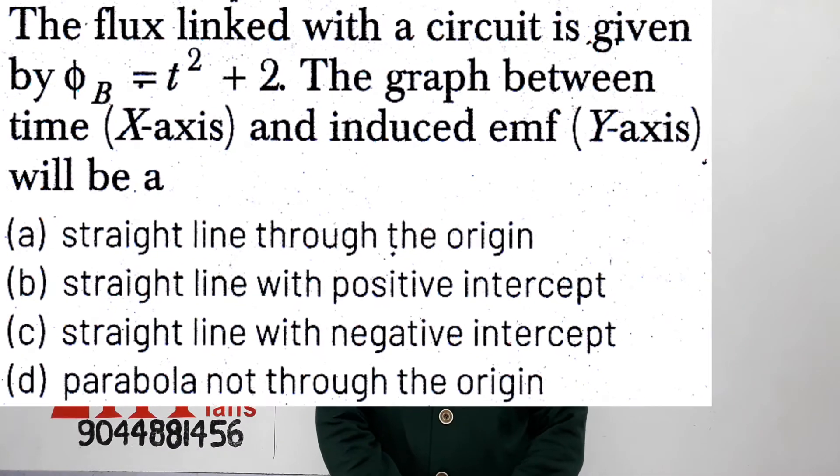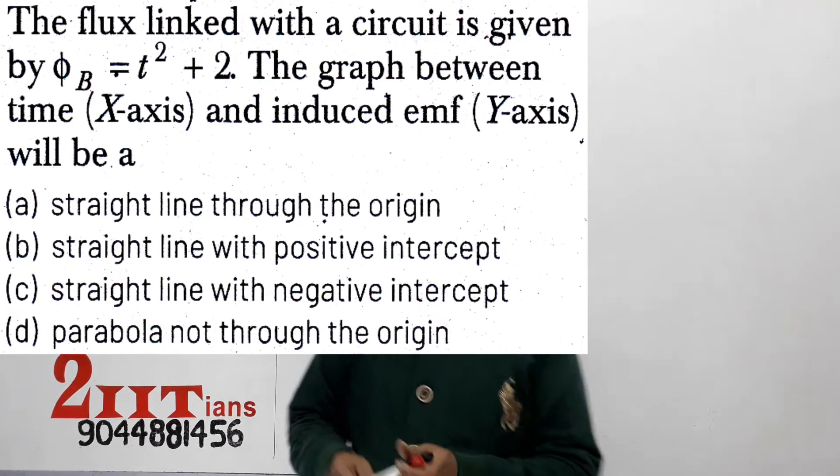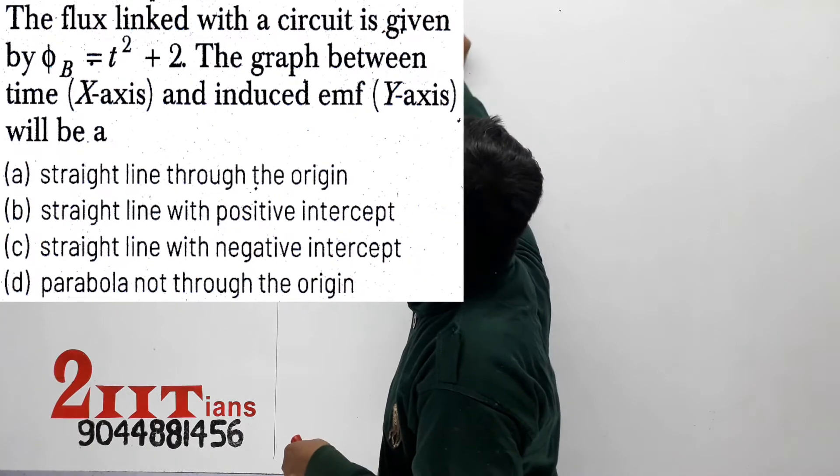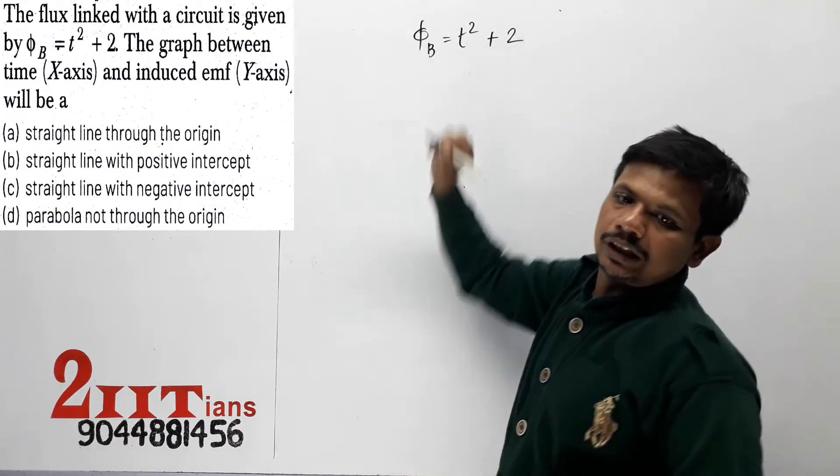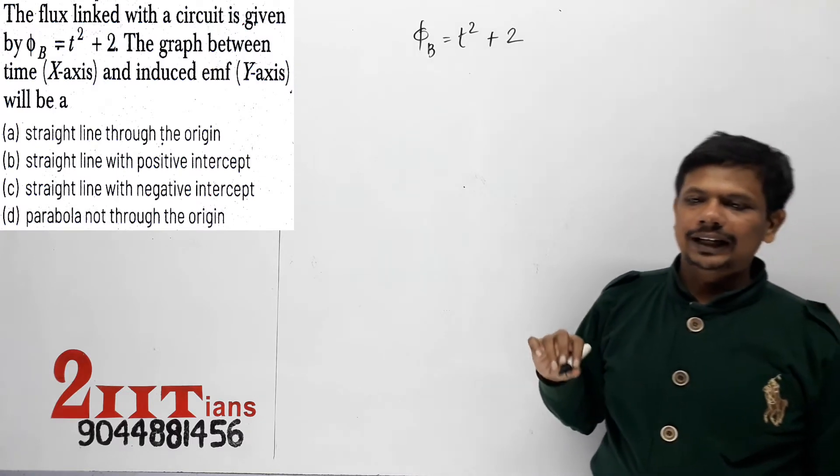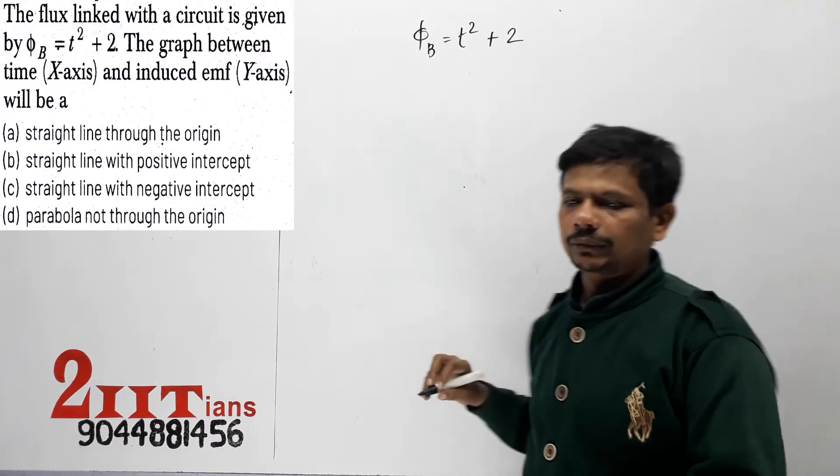The flux linked with a circuit is given by φ_B equals t squared plus 2. The graph between time and induced EMF will be: